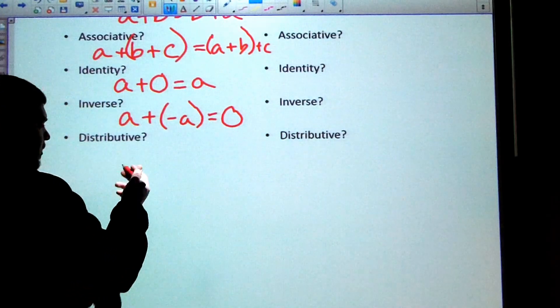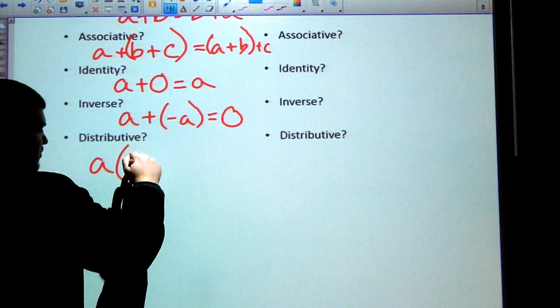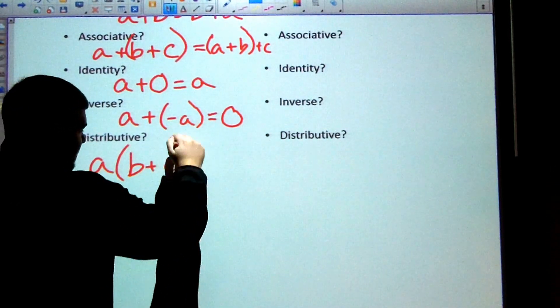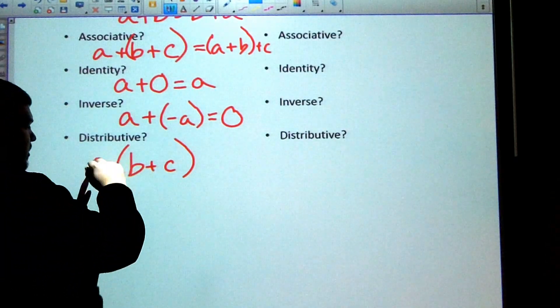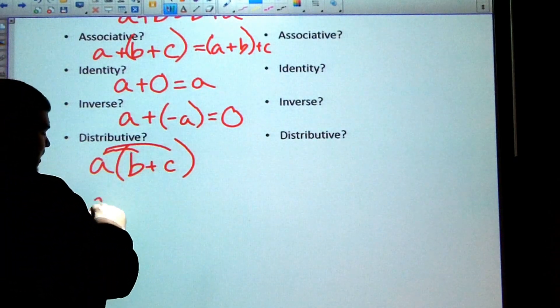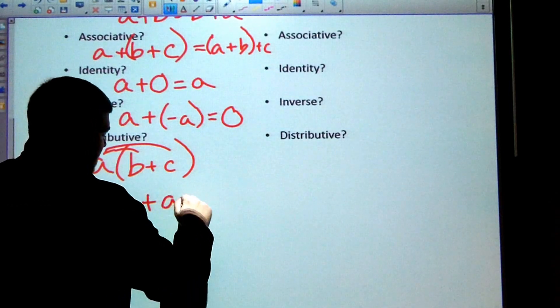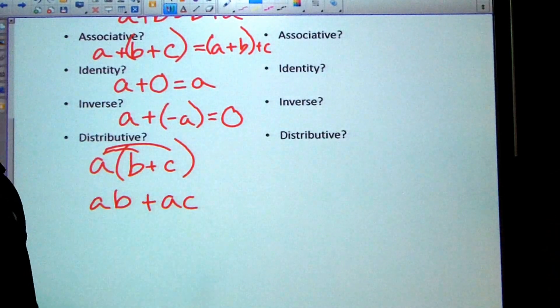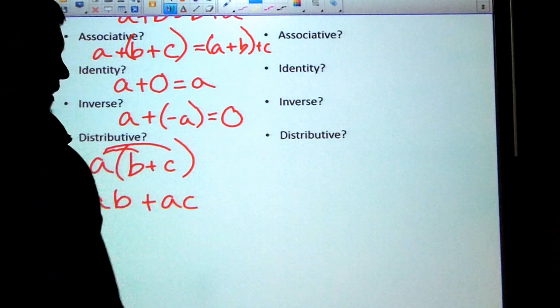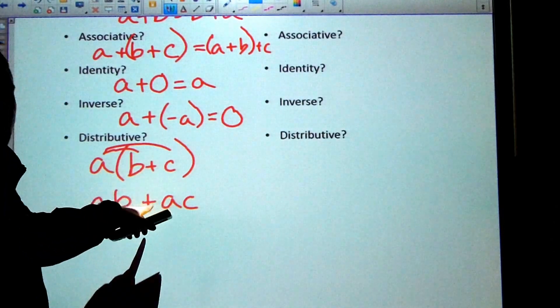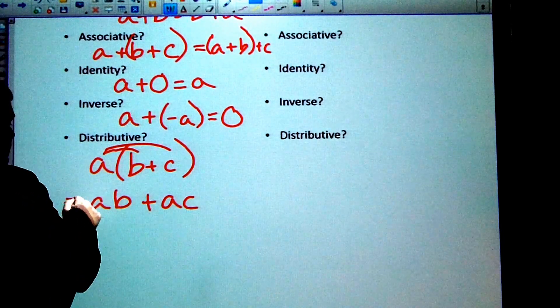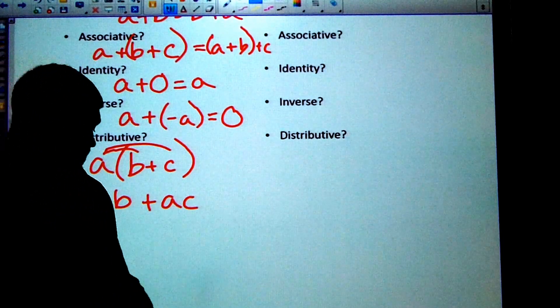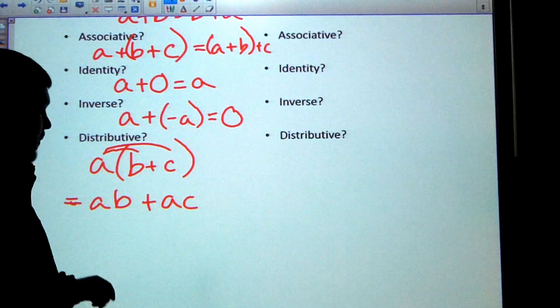And then finally, the distributive property. This is probably one of the most important properties you've heard of and used a lot. But it's just we have something like this, and we can distribute. We can distribute all the way across. So we have A(B + C) = AB plus AC. This is a super powerful tool. You need to be sure you know that. If you don't know anything else, you need to be sure you know the distributive property.